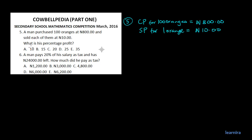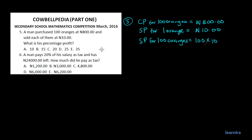The question asks: what is his percentage profit? Before answering, if the selling price for one orange equals 10 naira, then the selling price for 100 oranges will be 10 times 100. So the selling price for 100 oranges is equal to 100 times 10.